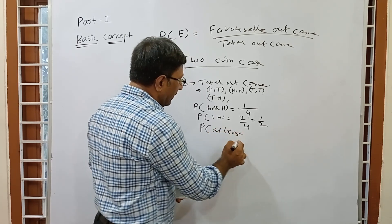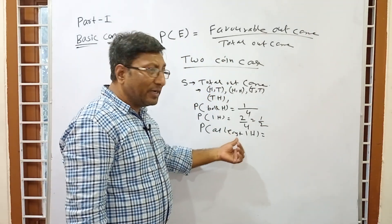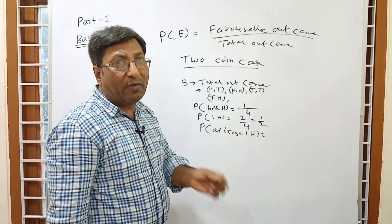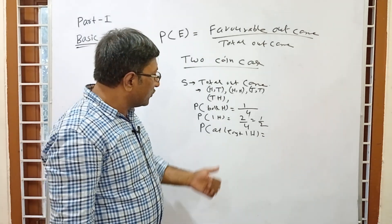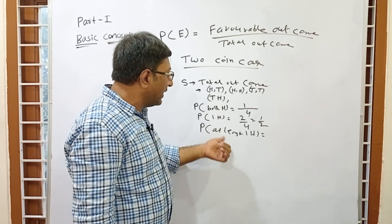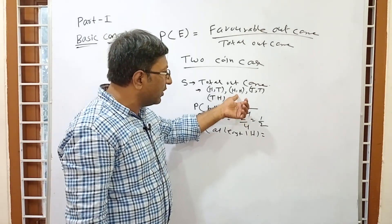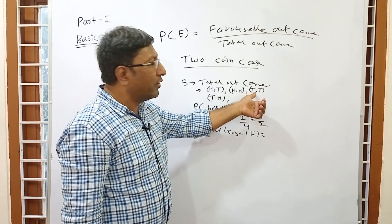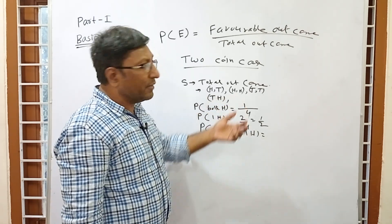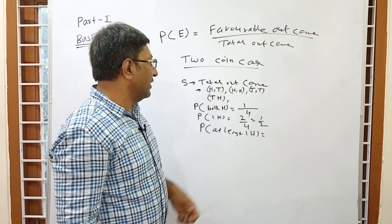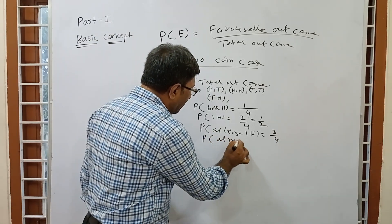Probability of at least 1 head — this is most important. 'At least 1 head' means a minimum of 1 head, and maximum has no limit. Looking at total outcomes: HT has 1 head — OK; HH has 2 heads — also OK since minimum 1 is satisfied; but TT has no heads — not favorable. So 3 outcomes are favorable: HT, HH, TH. The answer is 3/4.